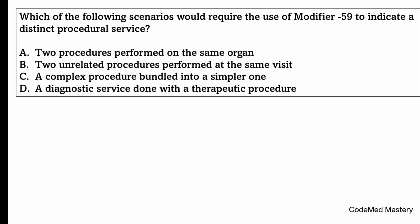The correct answer is option B — two unrelated procedures performed at the same visit. Modifier 59 is used to indicate that two procedures performed on the same day are distinct and should be reported separately. It should not be used when the procedures are related.